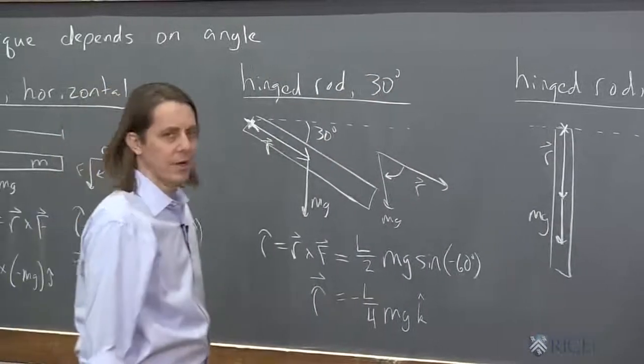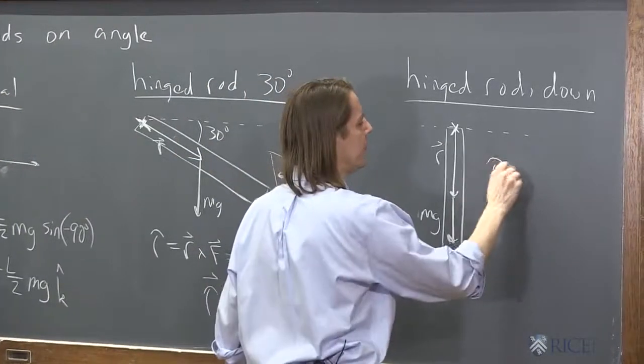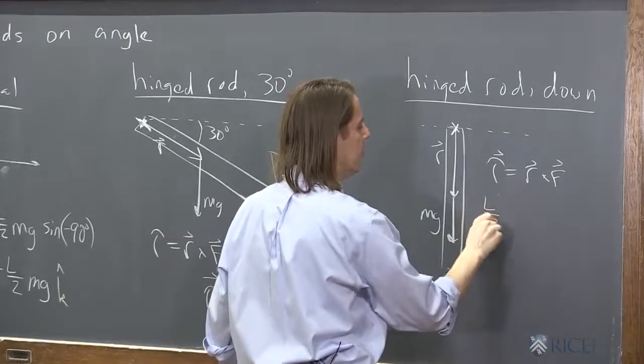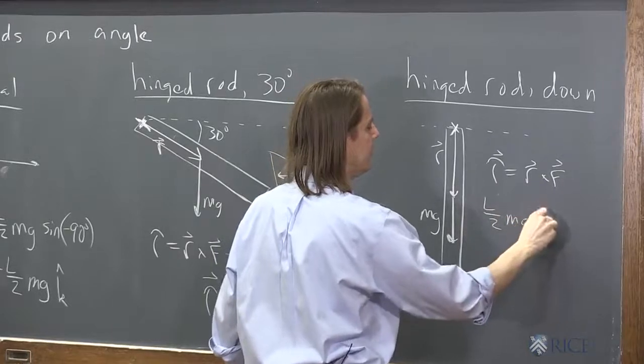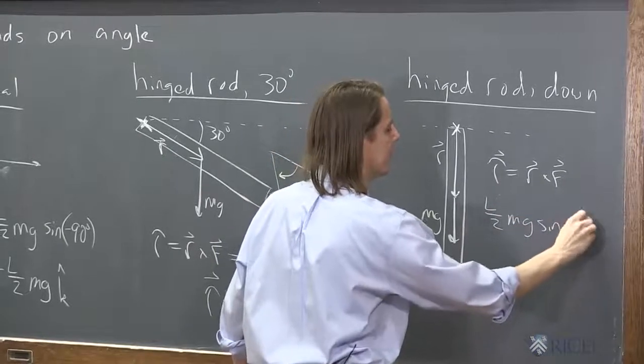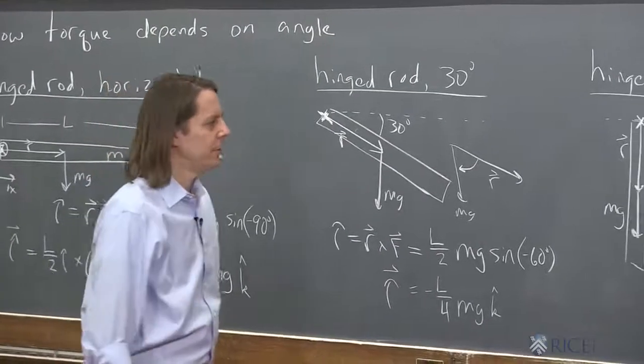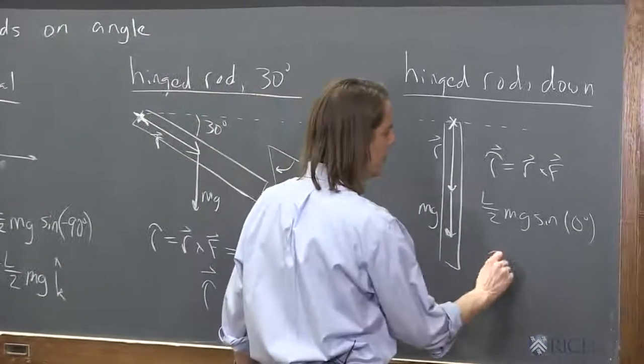And we say torque is R cross F. And it's R, which is still L over 2. It's F, which is still Mg. But the sine is now the sine of zero degrees. If you draw those tail to tail, they're right on top of each other. Zero degrees. The sine of zero is zero. It has no torque.